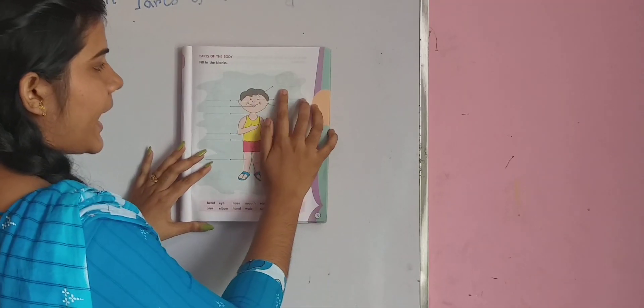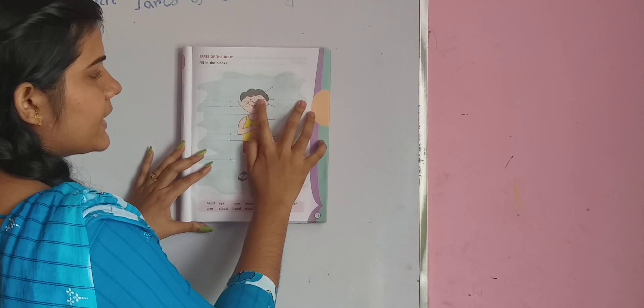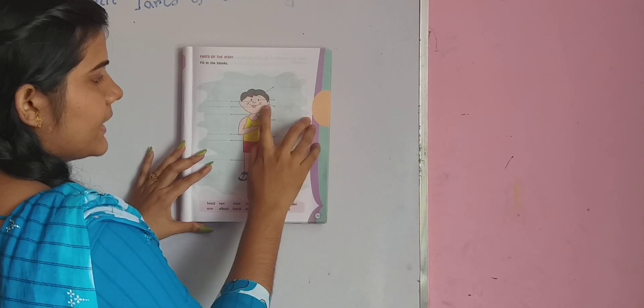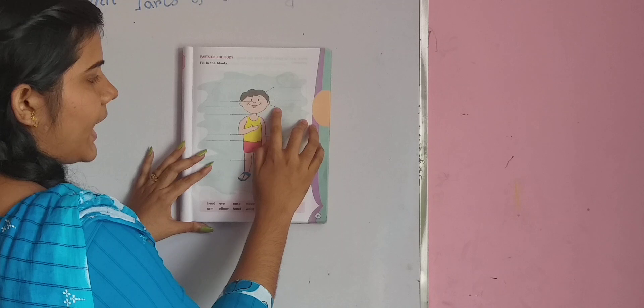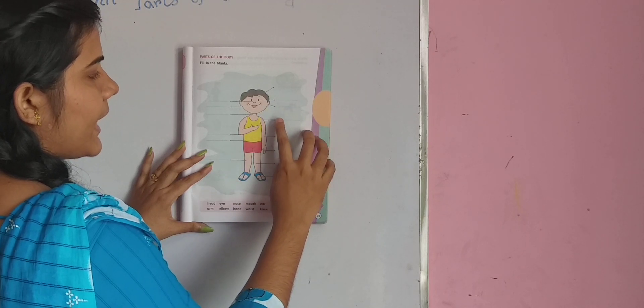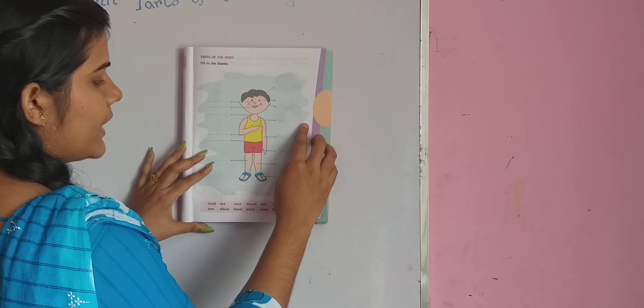This is head. H-E-A-D, head. Eye, E-Y-E, eye. Ear, E-A-R, ear. Shoulder, S-H-O-U-L-D-E-R, shoulder.